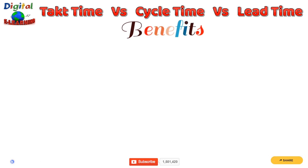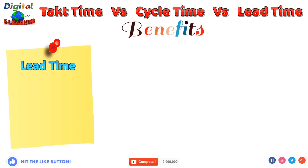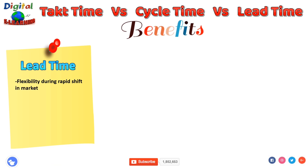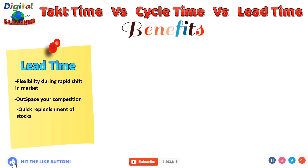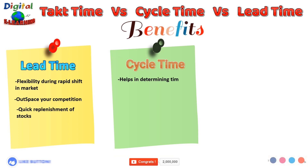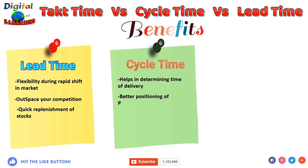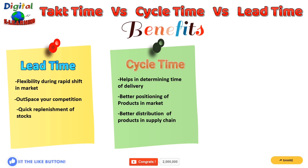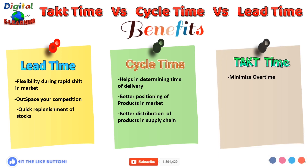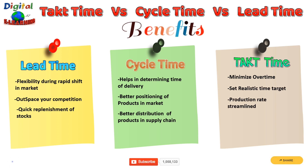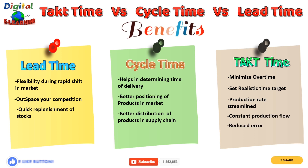Let us look at the benefits of takt time, cycle time, and lead time. For lead time: flexibility during rapid shifts in the market, outpacing your competition, and quick replacement of stocks. For cycle time: helps in determining delivery time, better positioning of products in the market, and better distribution in the supply chain. For takt time: minimizes overtime, sets realistic time targets, streamlines production rate, maintains constant production flow, and reduces errors while increasing quality of work.